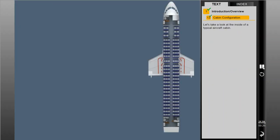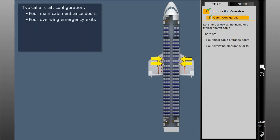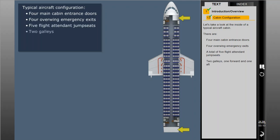Let's take a look at the inside of a typical aircraft cabin. There are four main cabin entrance doors, four overwing emergency exits, a total of five flight attendant jump seats, two galleys — one forward and one aft — and three lavatories, one forward and two aft.